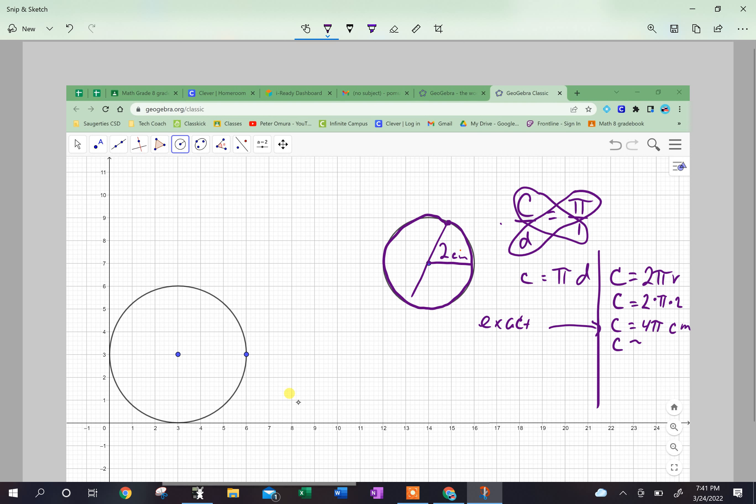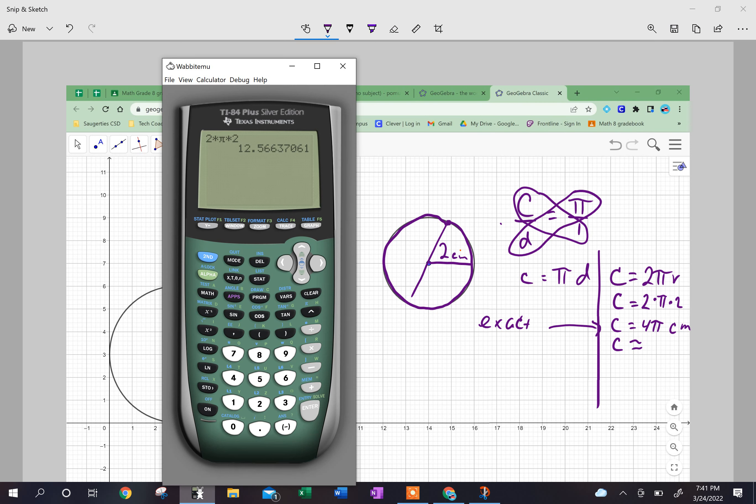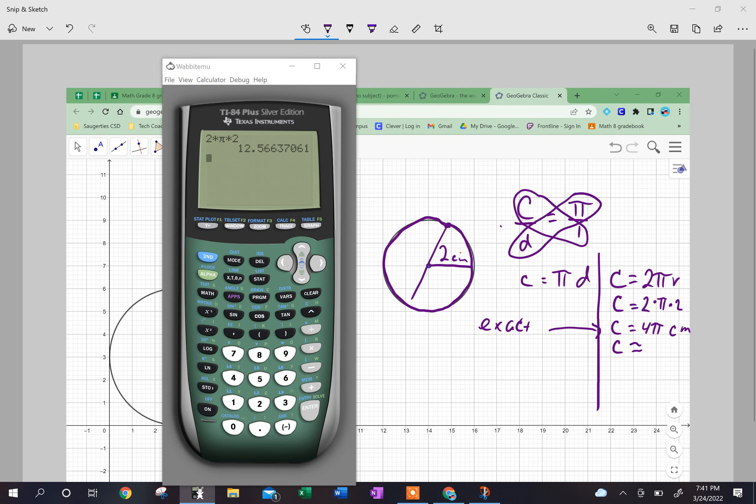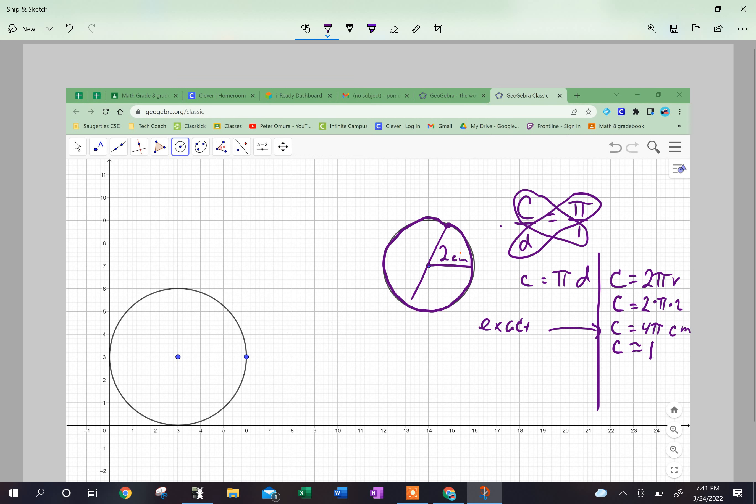I'm going to say 2 times pi times 2, and I get 12.56. The circumference is approximately—what does my calculator say—12.56. Now I'm going to round to the nearest hundredth, so it's going to be 12.57 because that six behind the first six tells me to round up. So 12.57 centimeters.